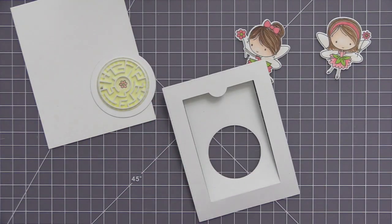So once I had them both colored in, I used the coordinating dies and cut both of them out, and now I have all the pieces ready to go and I can start to assemble the card.